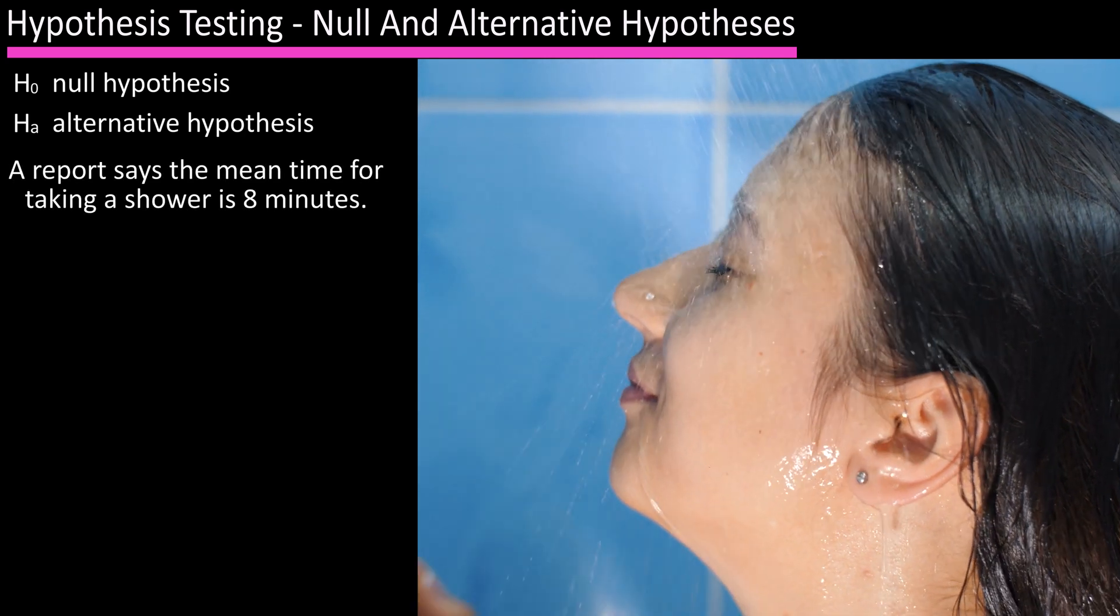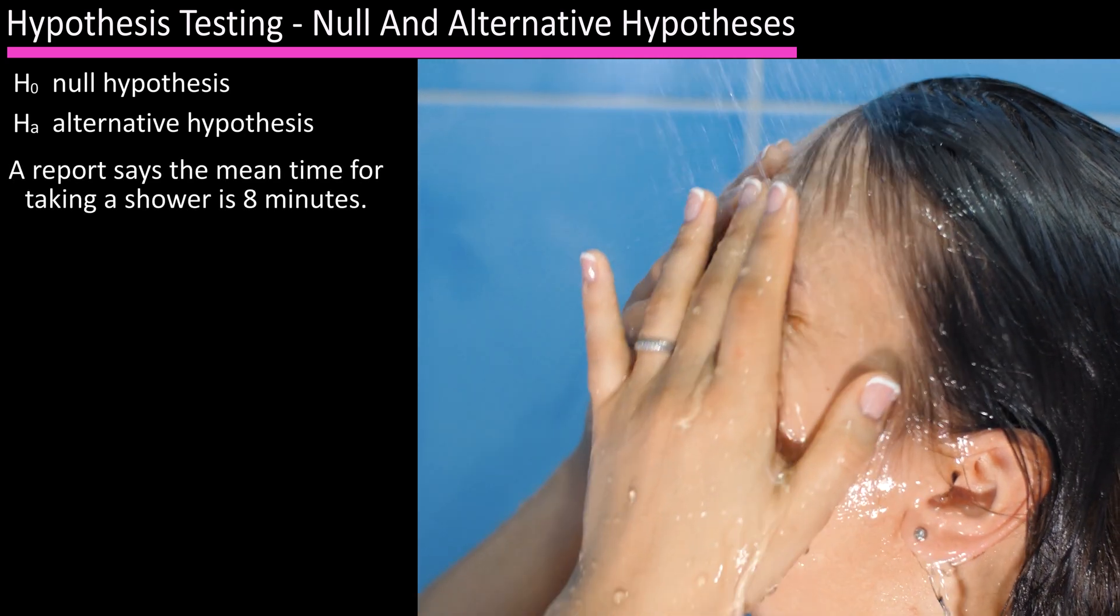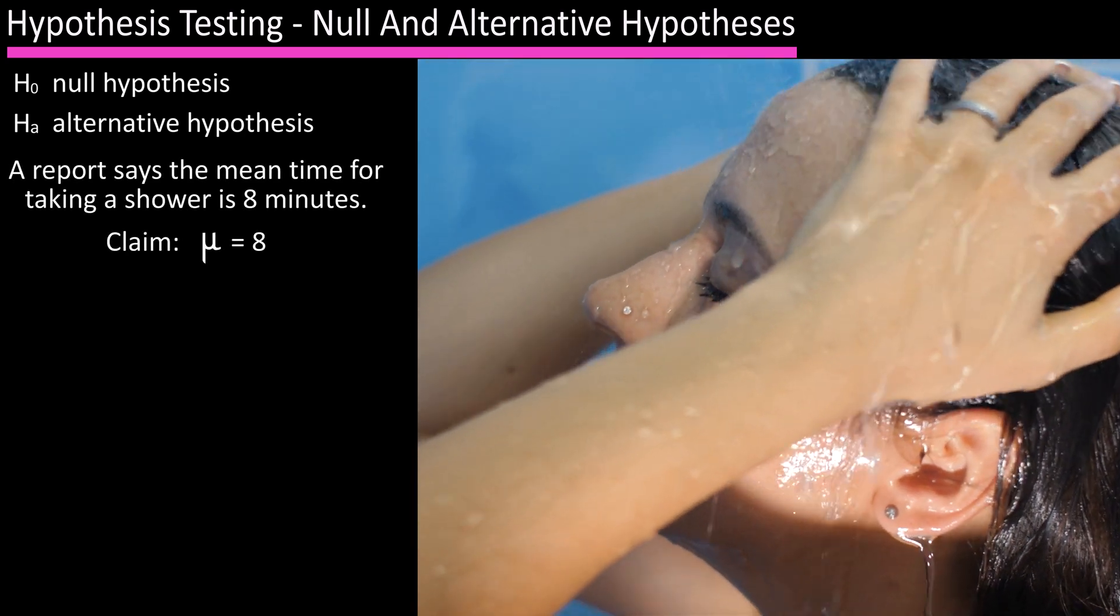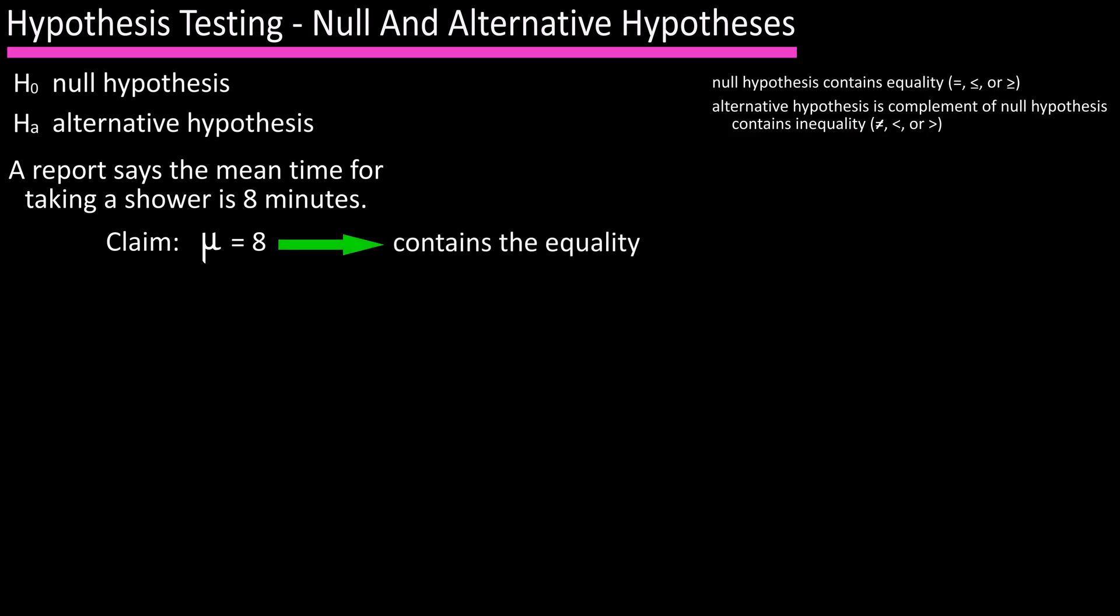A website published a report that the mean time for taking a shower is eight minutes. So the claim is that mu is equal to eight. The null hypothesis contains the equality so H sub zero is mu is equal to eight, and the alternative hypothesis is the complement of the null hypothesis and contains the inequality, so H sub a is mu does not equal eight.